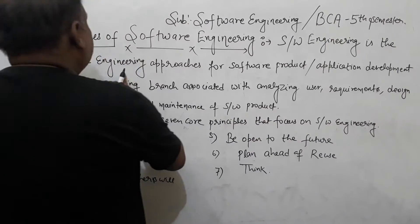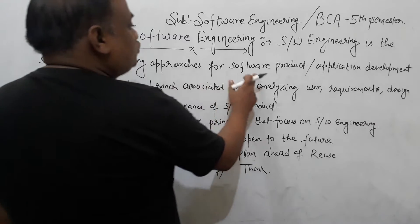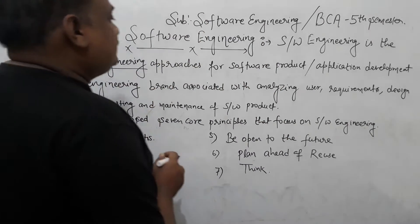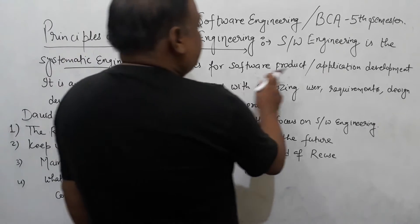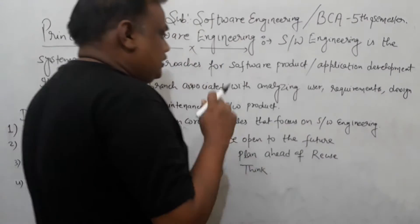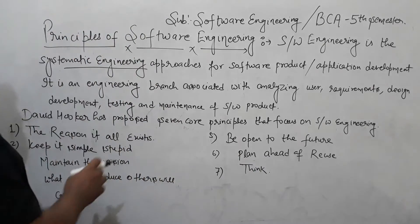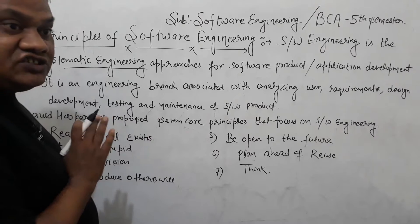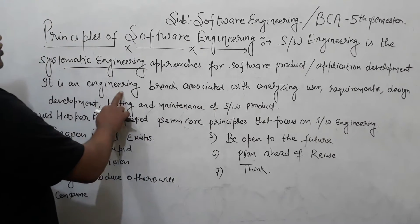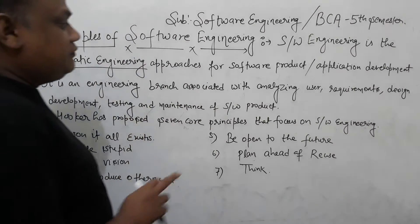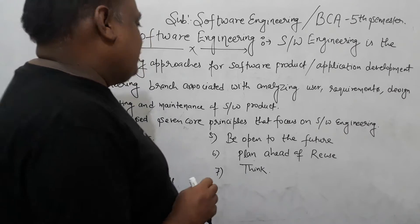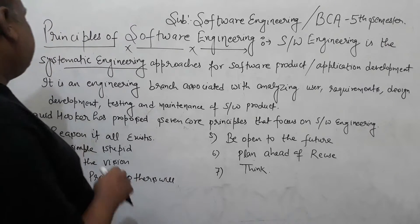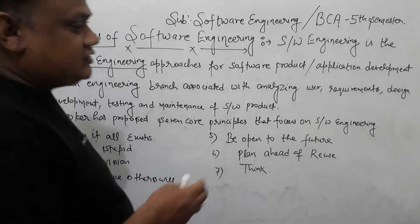Software engineering is the systematic engineering approach for software products. It is very important. Software is developed for software products and application development. What we have to do is the systematic approach. It is not haphazard, not zigzag — it is very systematic. It is an engineering branch associated with analyzing user requirements, design, development, and maintenance of software products. This is an engineering branch, which means software engineering.